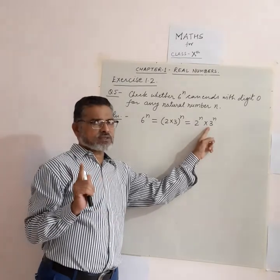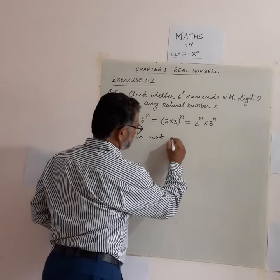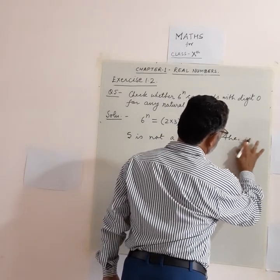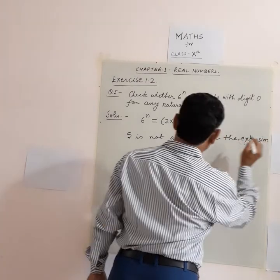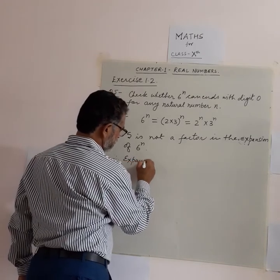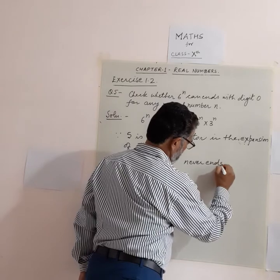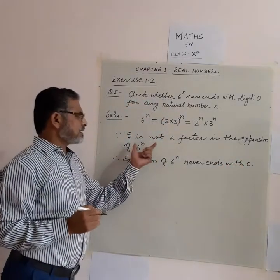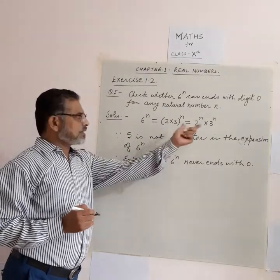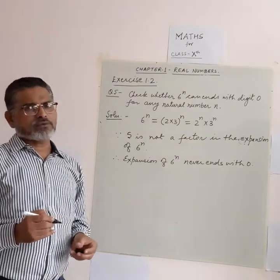Any power of 3 never gives a factor of 5. So 5 is not a factor in the expansion of 6^N. Therefore, 6^N never ends with the digit 0. The key point: any number ending with 0 must have both 2 and 5 as prime factors, but in 6^N only 2 is present, not 5.